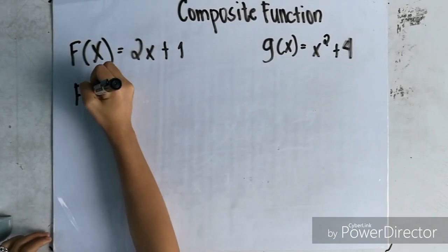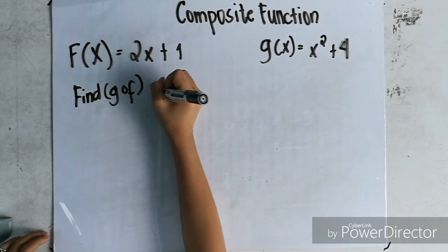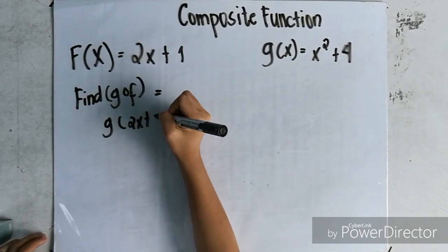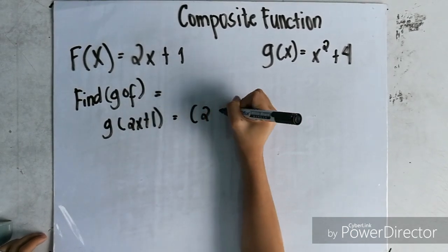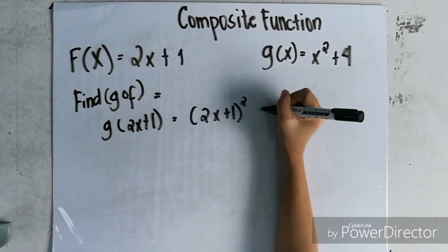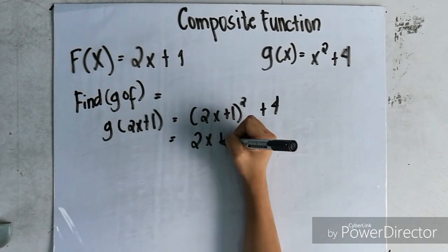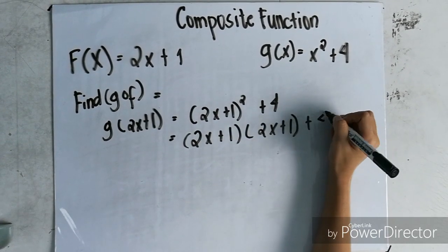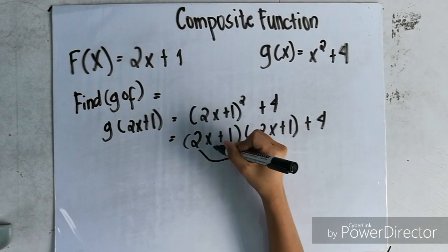Find g of f. First, we need to substitute the value of x with 2x plus 1, so x equals 2x plus 1, and the quantity of 2x plus 1 squared, plus 4. Separate 2x plus 1 and 2x plus 1, then copy plus 4.